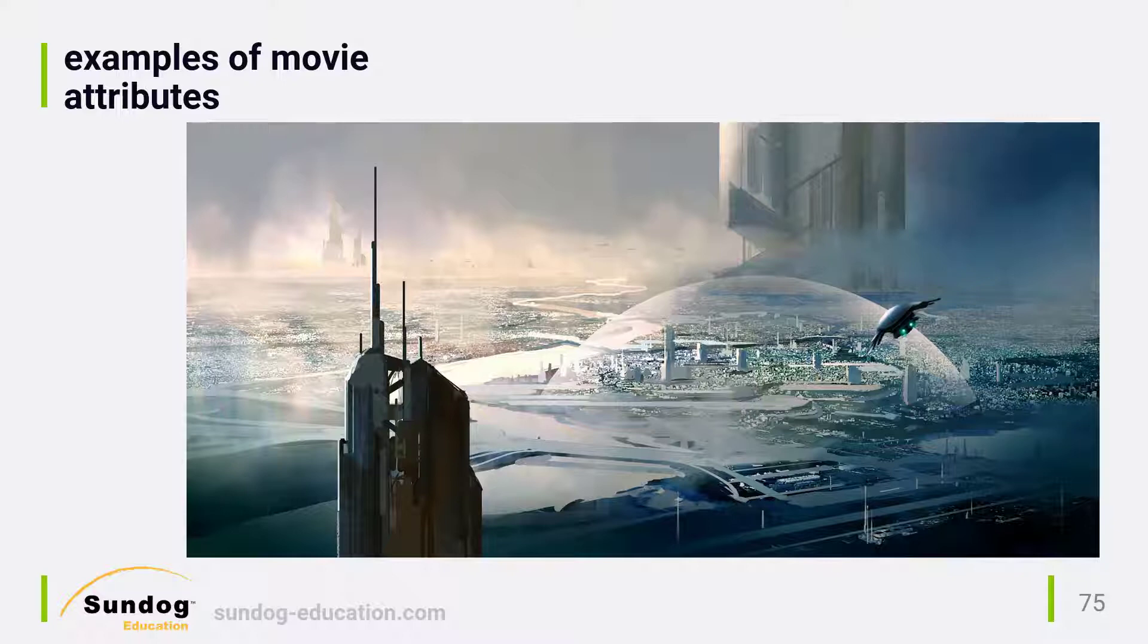So let's think about recommending movies just based on the attributes of the movies themselves. The MovieLens dataset doesn't give us much to work with, but one thing it does tell us is which movie genres each movie belongs to. For every movie, we're given a list of genres like science fiction, horror, romance, children's, westerns, etc. that might apply to that movie.